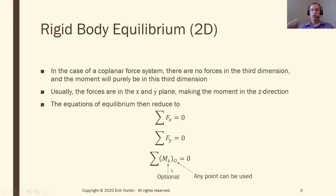For equilibrium in terms of rotation, it doesn't actually matter what point you take the moment around — left side, right side, or center. As long as that moment is zero, the whole body will not rotate. So here are my three equations of equilibrium: for any two-dimensional object, there needs to be no net force in X, no net force in Y, and no net moment around any point. If all three equations are satisfied, that object is in equilibrium.